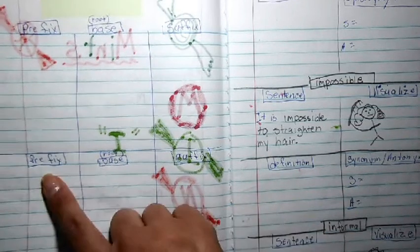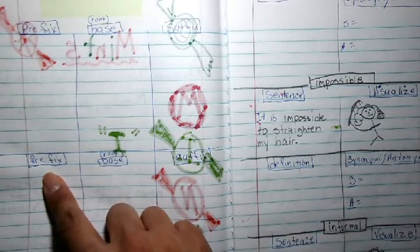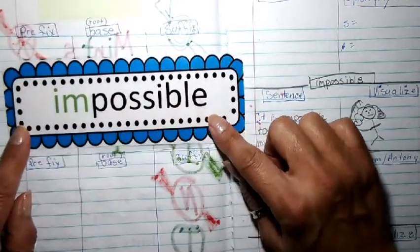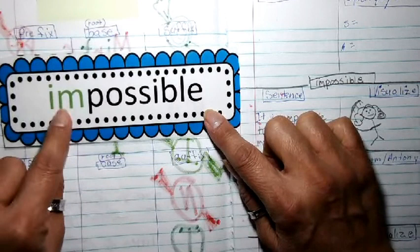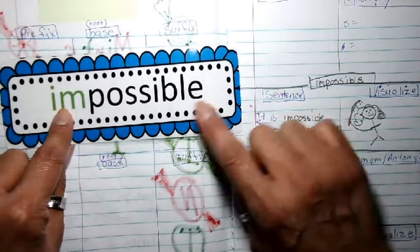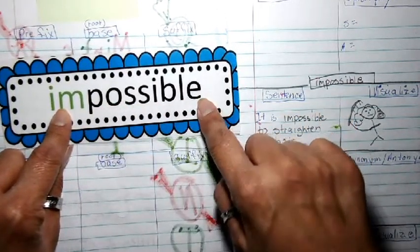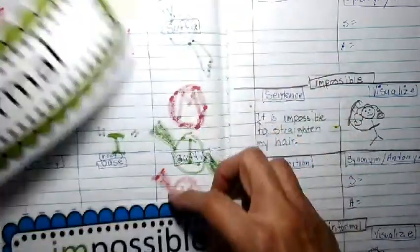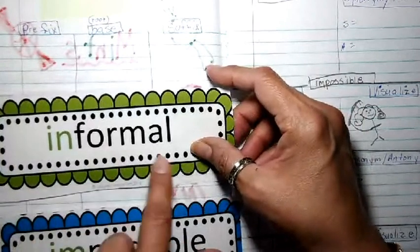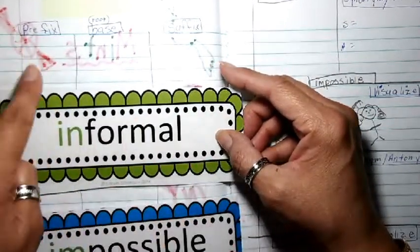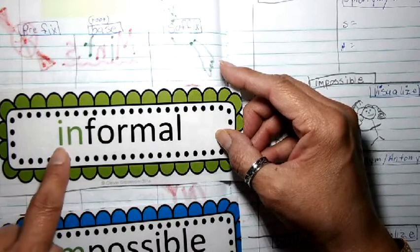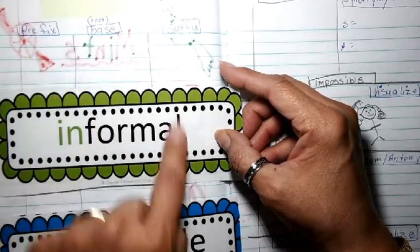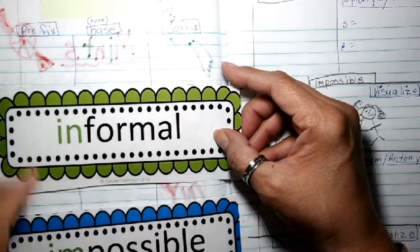What is a prefix found of the word impossible? A prefix is at the beginning. My base word is in black. So that would go here. How about my other word? Informal. My prefix is found where? At the beginning of the word. My base. And then the suffix is found at the end. Okay.